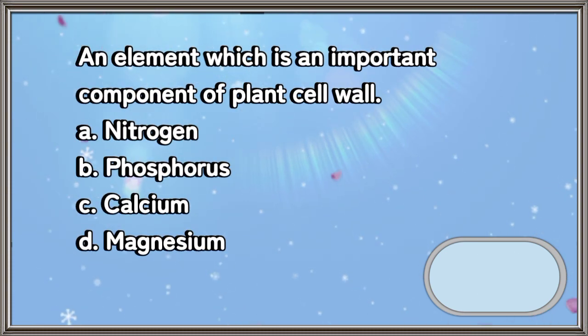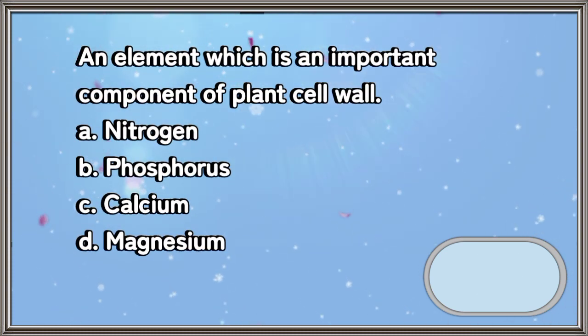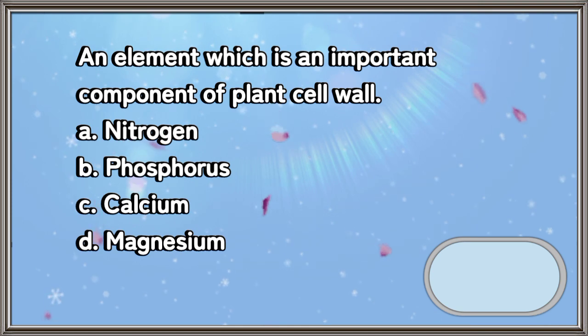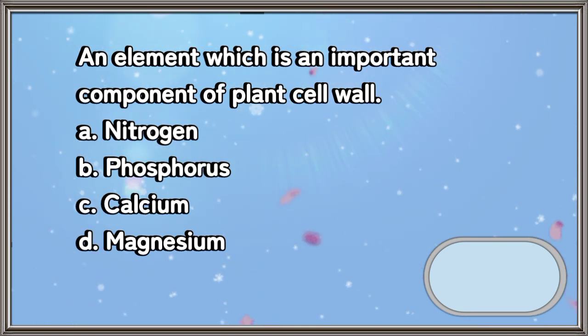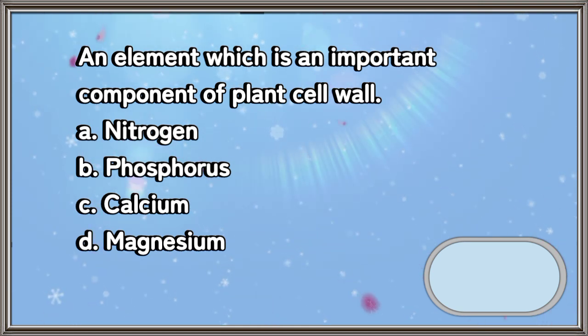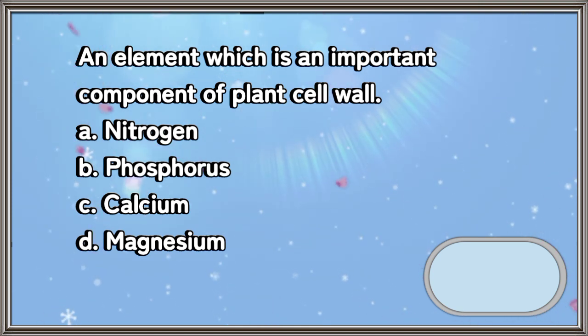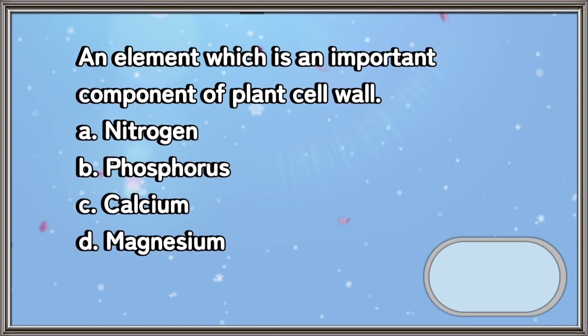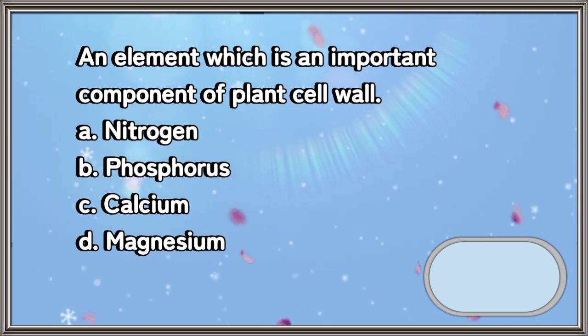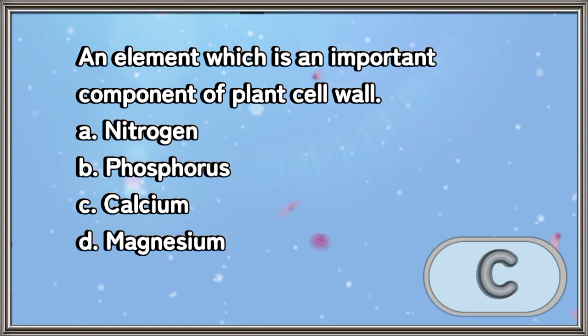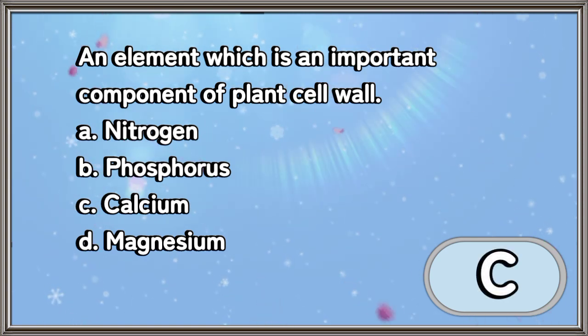An element which is an important component of plant cell wall. A. Nitrogen. B. Phosphorus. C. Calcium. D. Magnesium. The answer is letter C.